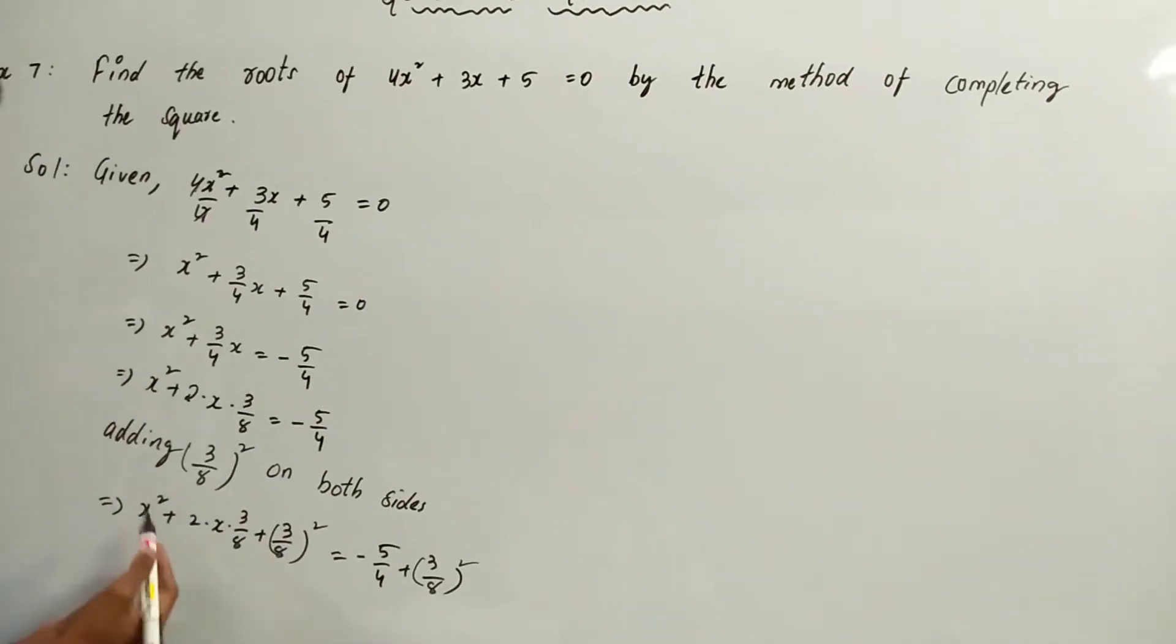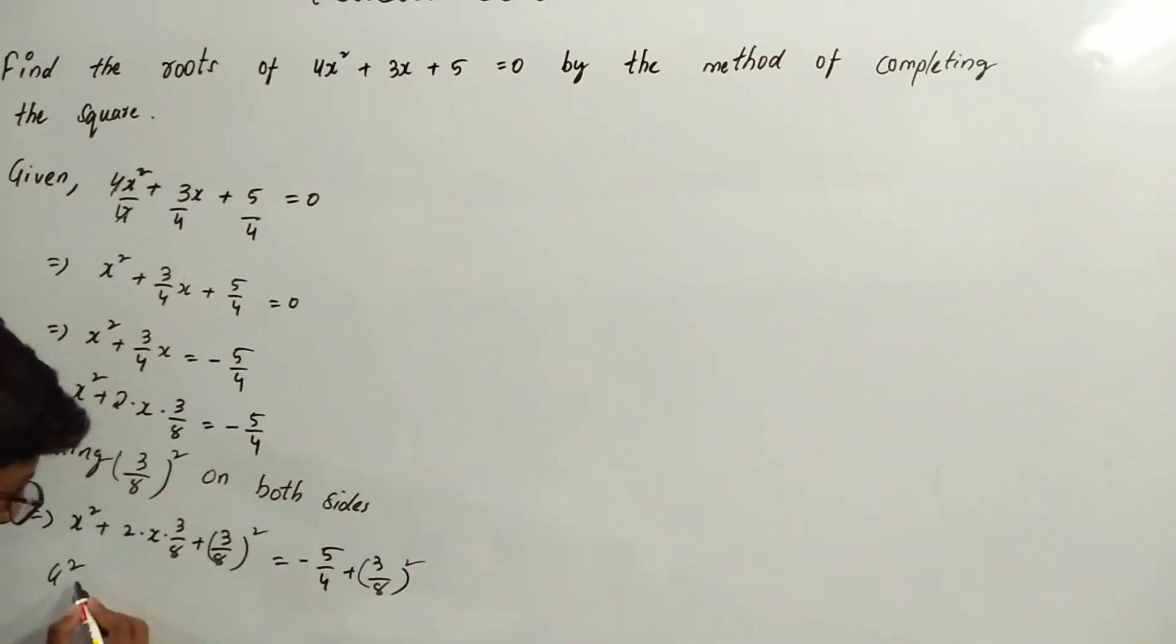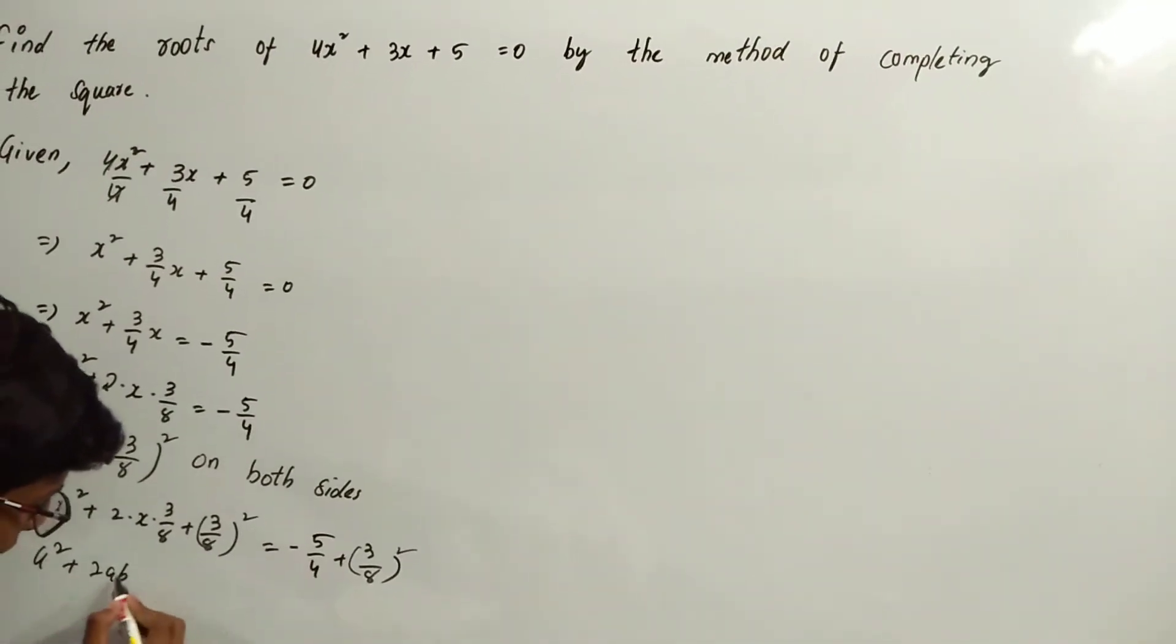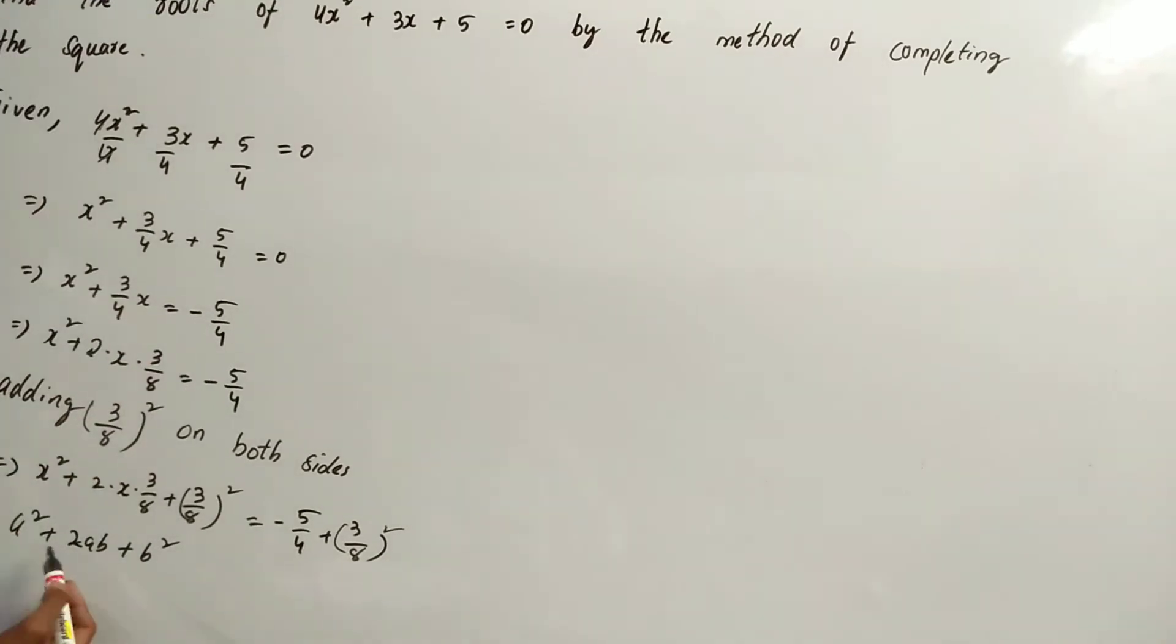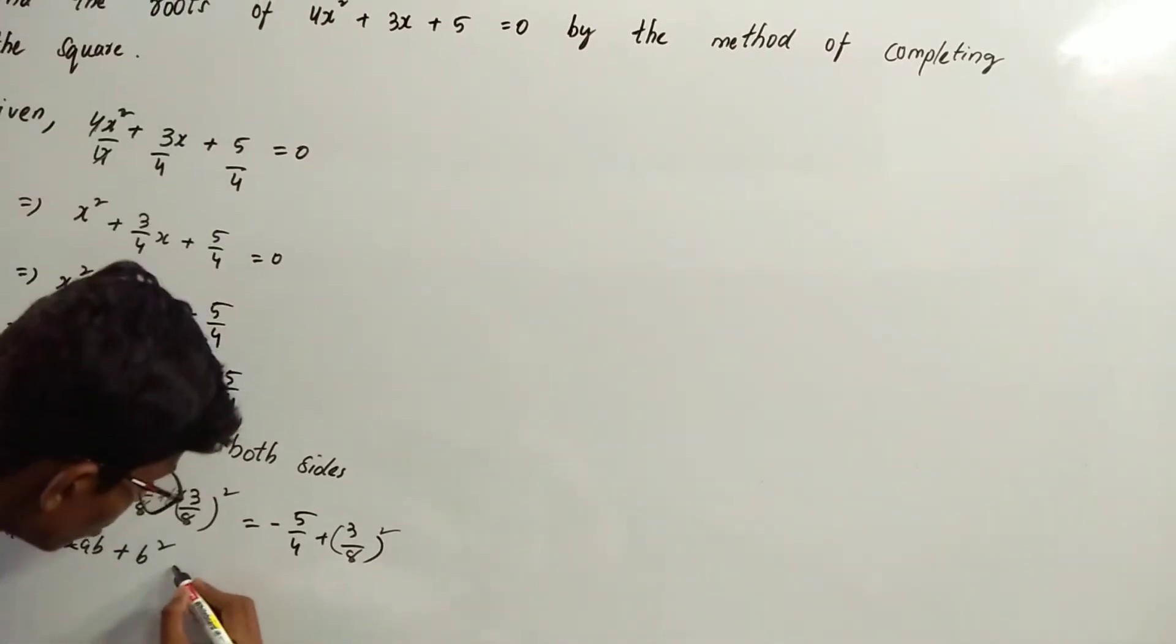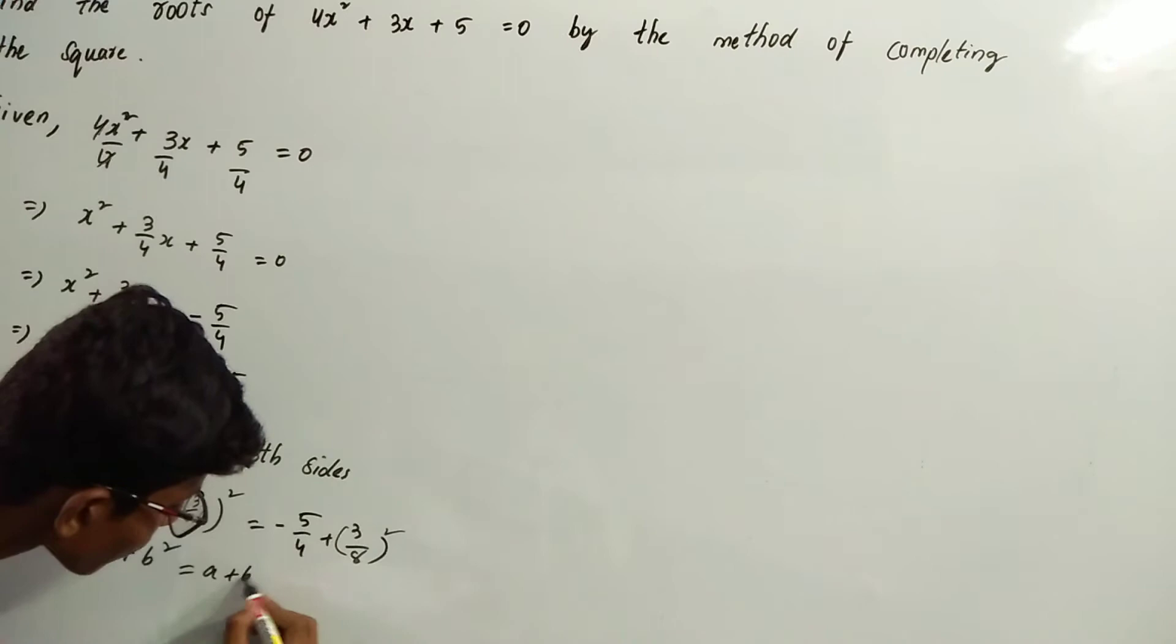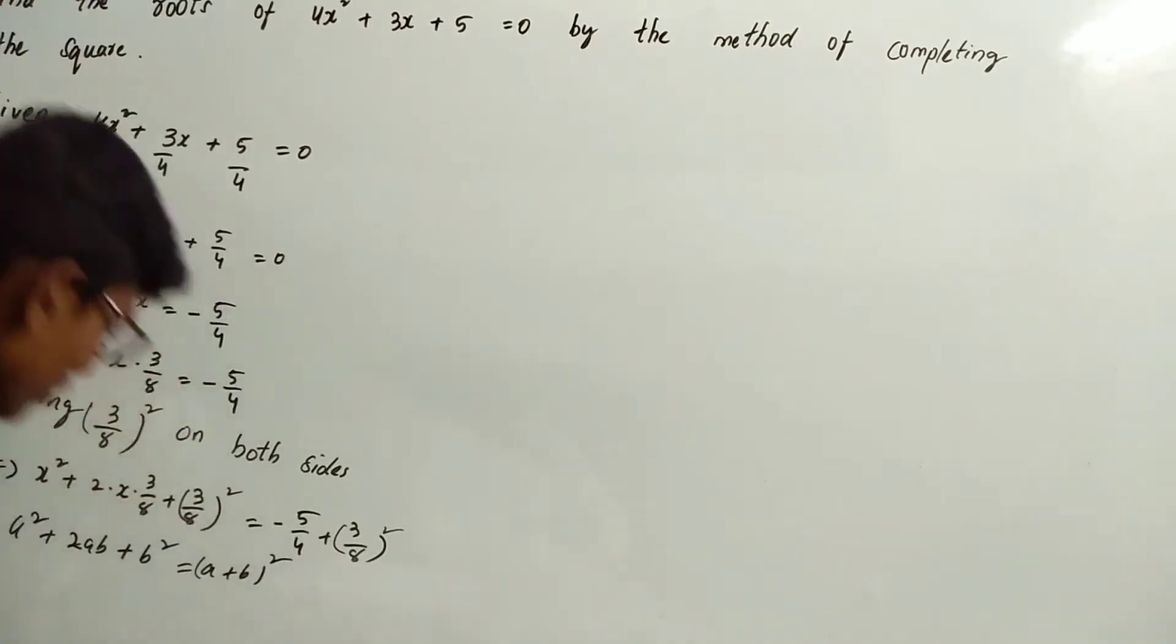Here it is in the form of A² + 2AB + B². We know that A² + 2AB + B² = (A + B)². Here, A is x.